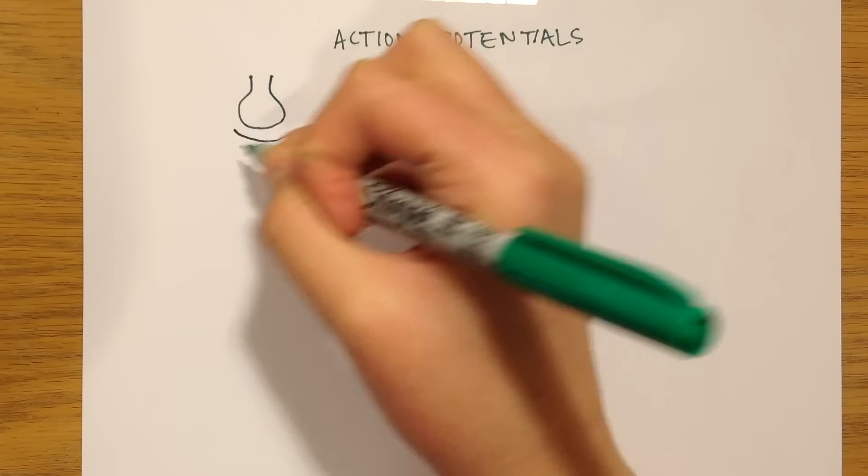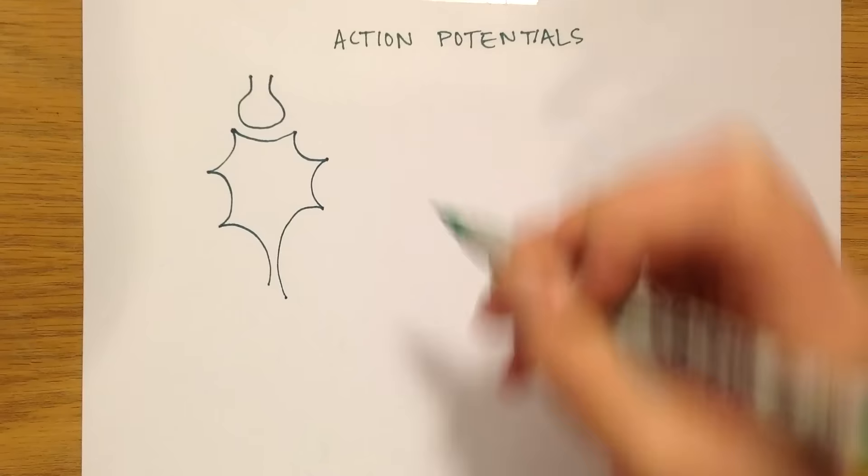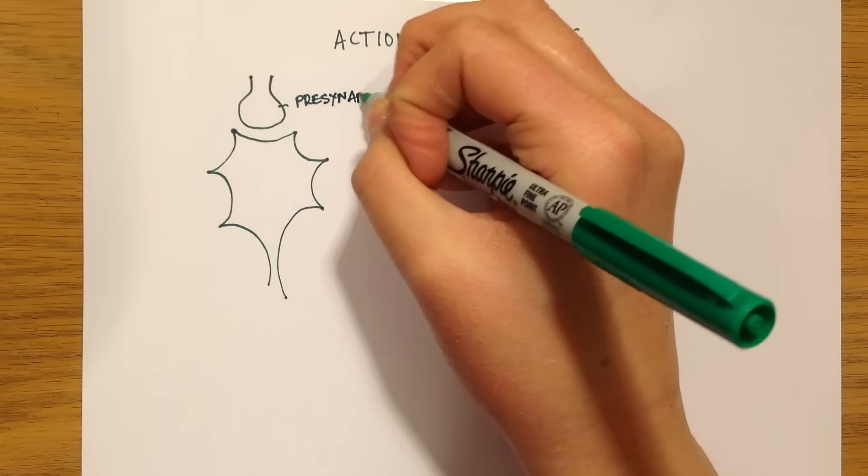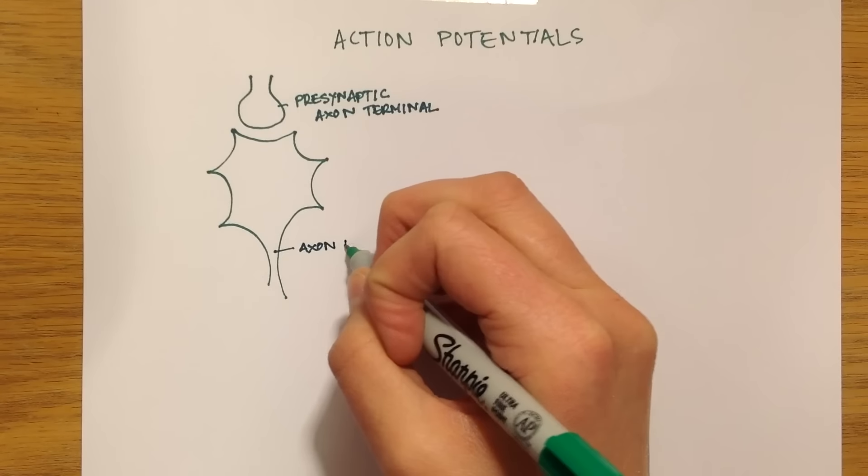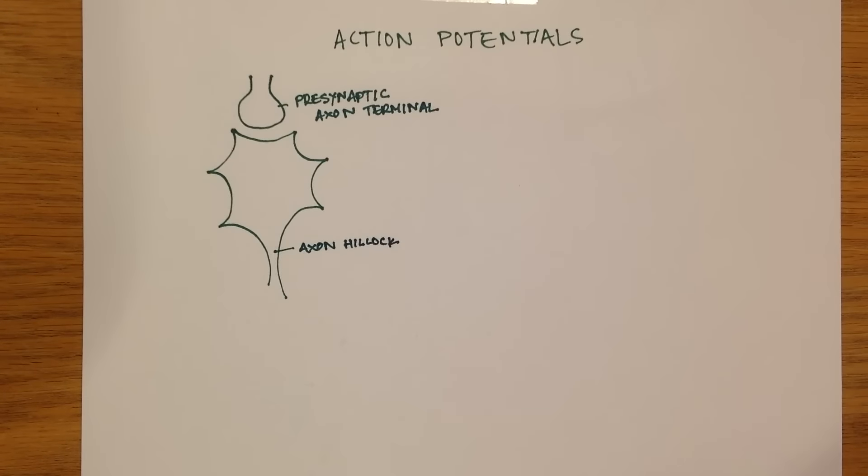Here I will draw a simplified diagram showing a presynaptic axon terminal stimulating a postsynaptic neuron. In order for an action potential to occur in the postsynaptic neuron.